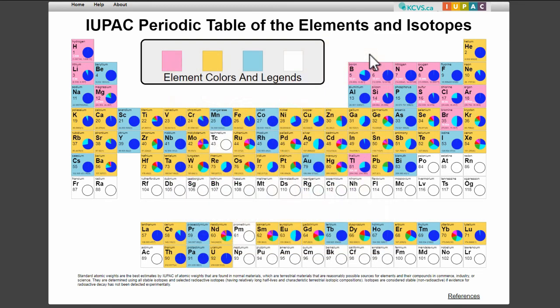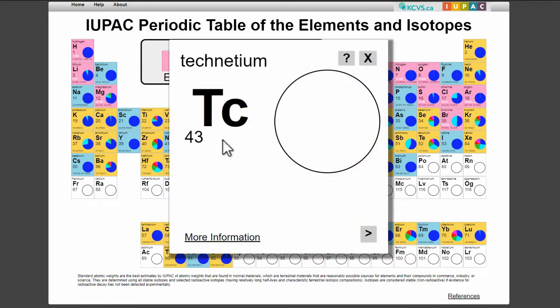Elements with white backgrounds have no stable isotopes, so they do not have a standard atomic weight or pie chart on their tile.